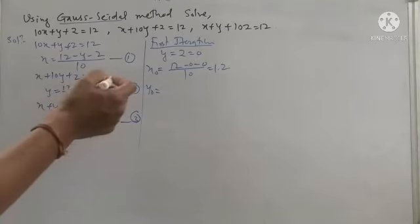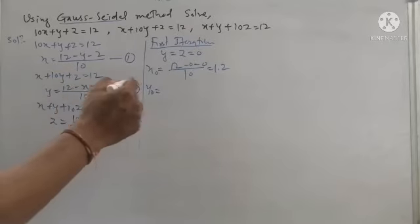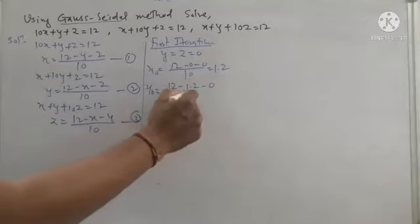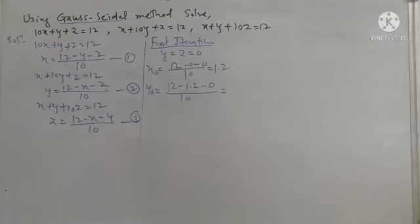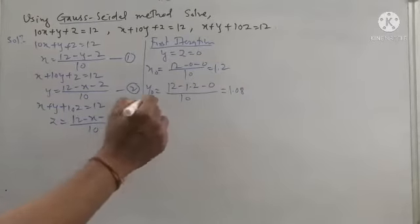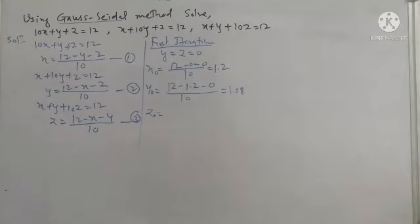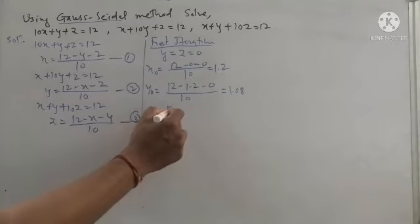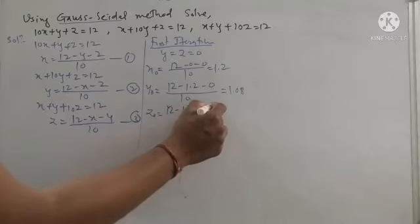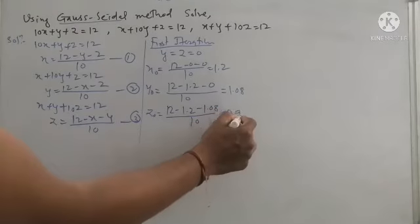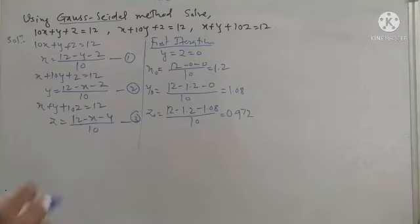For y naught, we use equation 2 by putting x as x naught = 1.2 and z = 0, giving (12 - 1.2 - 0) / 10 = 1.08. For z naught, we use equation 3, putting x = 1.2 and y = 1.08, so (12 - 1.2 - 1.08) / 10 = 0.972.